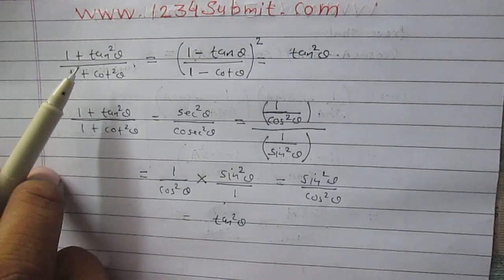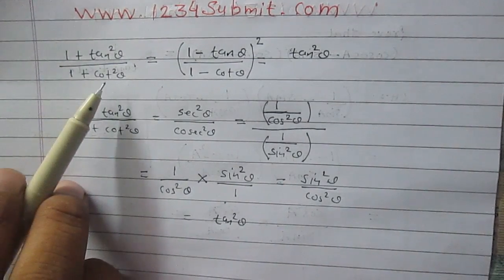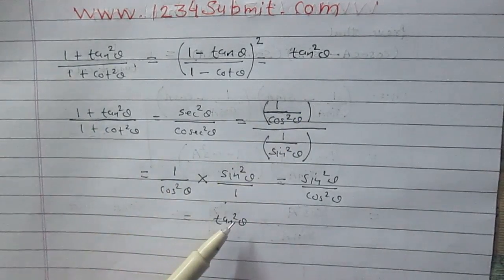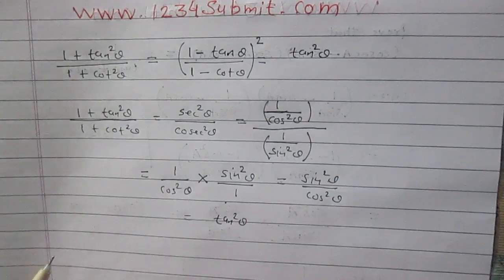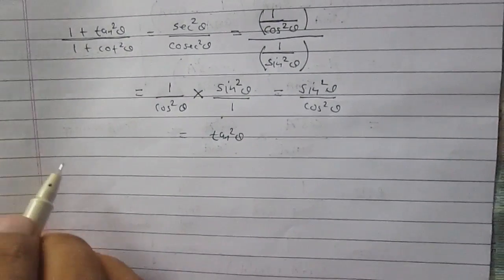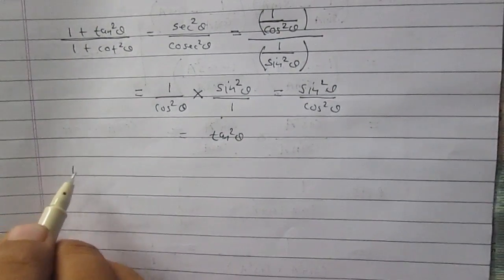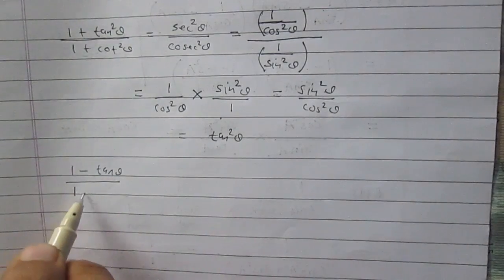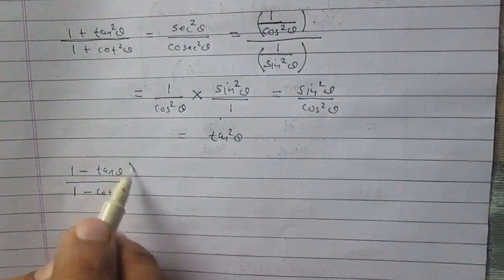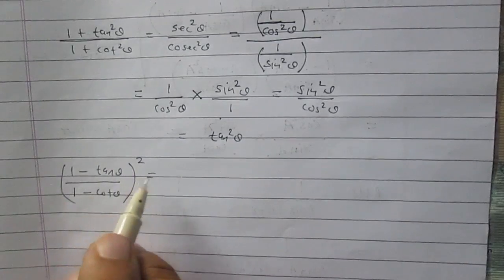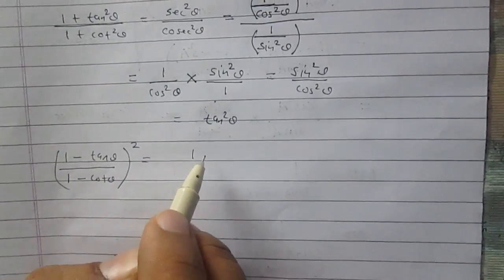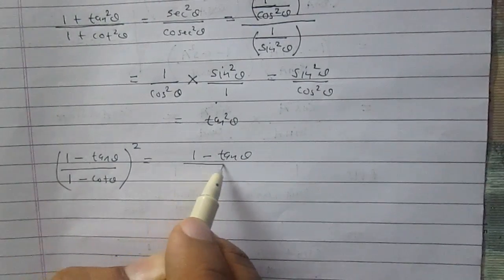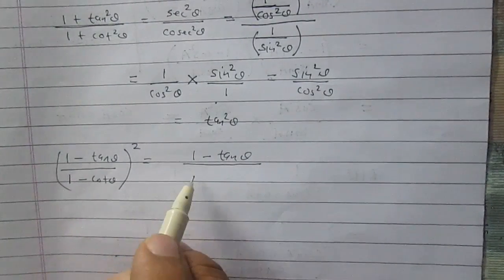So we have proved that (1 + tan²θ) / (1 + cot²θ) is equal to tan²θ — the third term. Now consider the second term: (1 - tanθ) / (1 - cotθ), whole square. We know that tanθ and cotθ are reciprocal of each other.